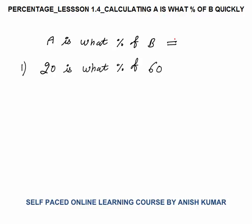Hello, this is percentage lesson 1.4. In this I will discuss how to calculate: a is what percent of b. When I need to calculate a is what percent of b, this is simply equal to a divided by b, multiplied by 100. That formula gives our final answer.